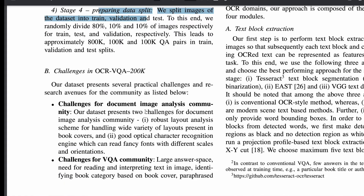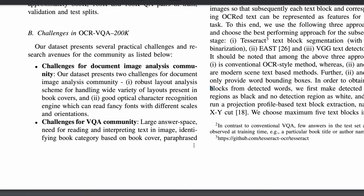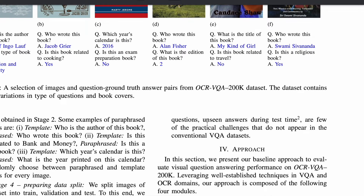They also identify challenges in the dataset. The first is the variety of layouts in book covers, since there's no standard template. Fonts and styles also vary, making it challenging for an OCR engine to read all variations and orientations. The second category is challenges for the VQA community — such as abstractive QA like identifying book category from a cover, and variability in the quality of paraphrased questions.